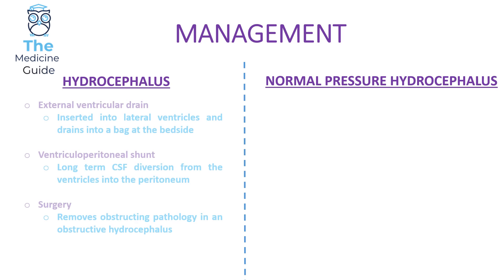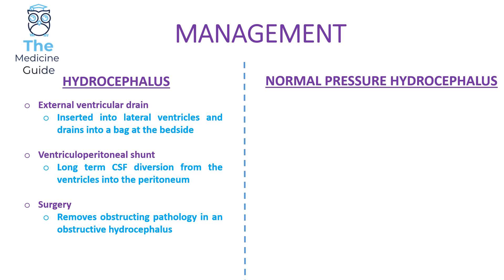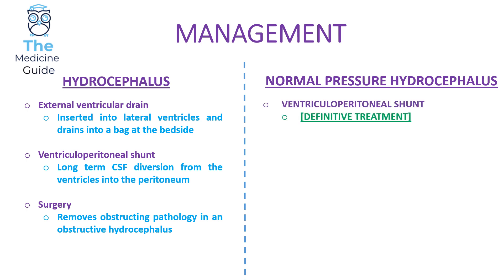Looking at management in more detail: for hydrocephalus, we can initially perform an external ventricular drain, draining CSF fluid at the patient's bedside. The next step is a ventricular peritoneal shunt — longer-term management diverting CSF from the ventricles into the abdominal peritoneum. We can also consider surgery to remove any obstructing pathology in obstructive hydrocephalus. For normal pressure hydrocephalus, the ventricular peritoneal shunt is the definitive treatment: after 50 ml CSF removal via lumbar puncture, if the patient's gait improves, a VP shunt is indicated.